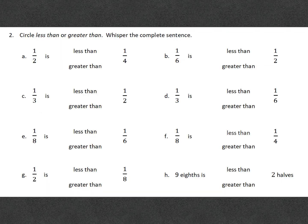Next up, circle less than or greater than. Whisper the complete sentence. Less than is when a fraction is smaller than another fraction. And greater than is the opposite. The fraction is bigger than the other fraction. For A, one half is greater than one fourth because one half is bigger than one fourth.